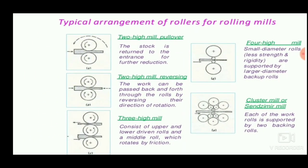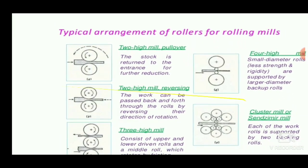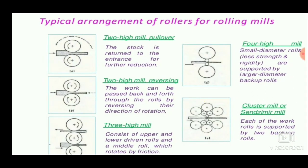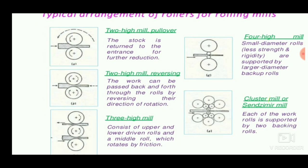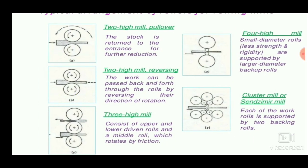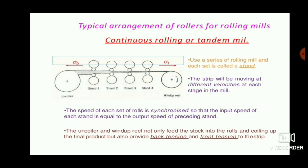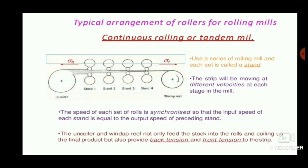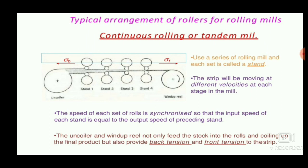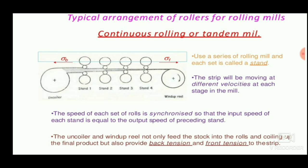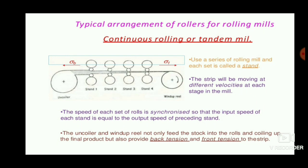Different wheels and directions are applied in the rolling mills. There are different types such as two high mill pullover, two high mill reversing, three high mill, four high mill, and cluster mill. Different rollers are used for different purposes such as fine thickness and even grain size. In continuous rolling, rollers of various sizes with different compressive stresses are applied to make a fine sheet in a continuous process. It uses a series of rolling mills and each set is called a stand. The strip moves at different velocities at each stage in a mill to get differently sized plates.